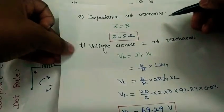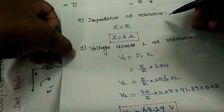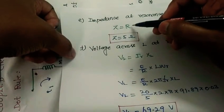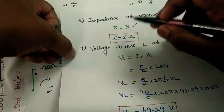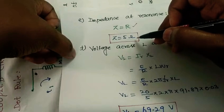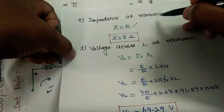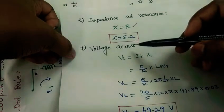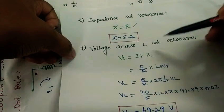Next, impedance at resonance. At resonance condition, Z equals R, so impedance at resonance is 5 ohms.